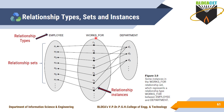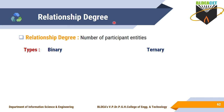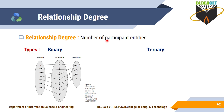Relationship types relate entity types. The employee entity type is related with the department using the relationship type 'Works For.' Next is relationship degree — relationship degree is the number of participant entity types. For example, the 'Works For' relationship type relates how many entity types? Employee is one and department is another, so the degree of this relationship type is two.